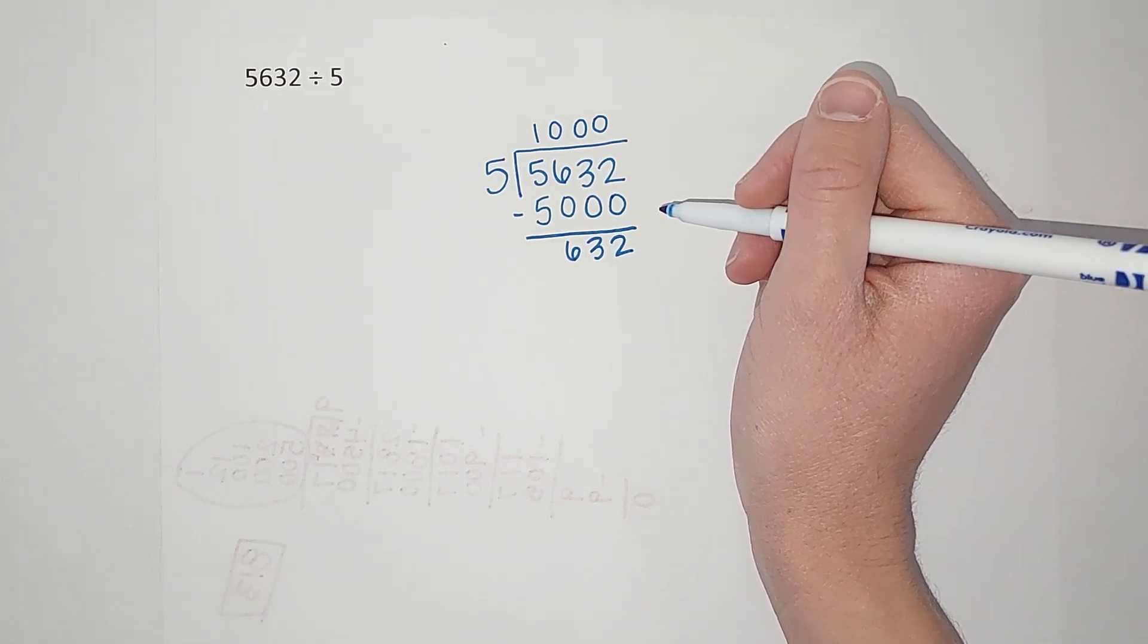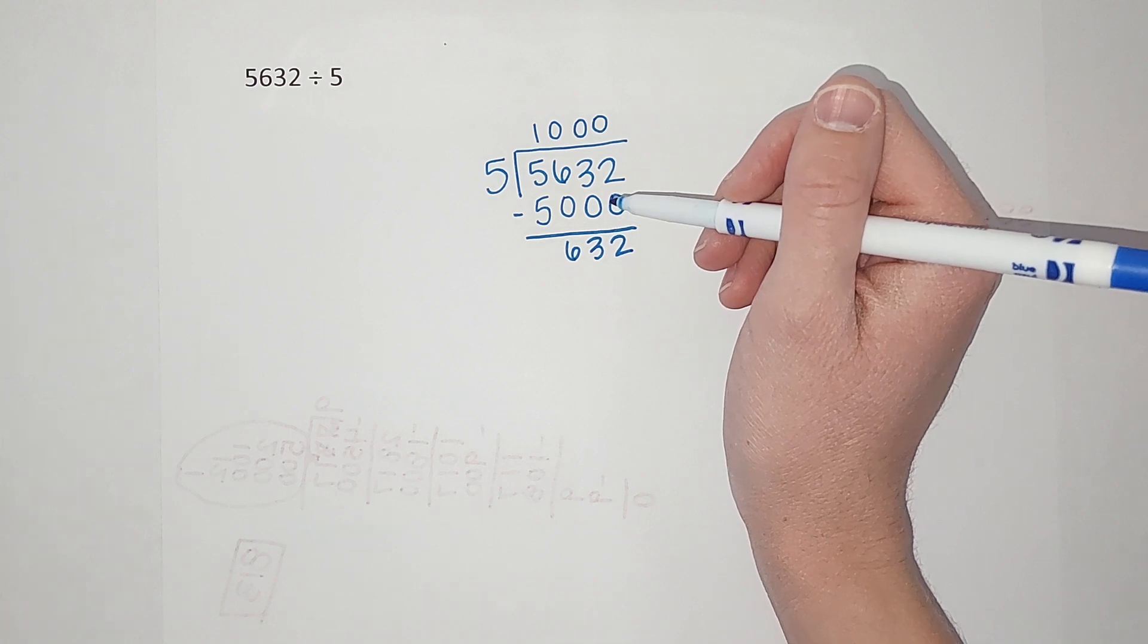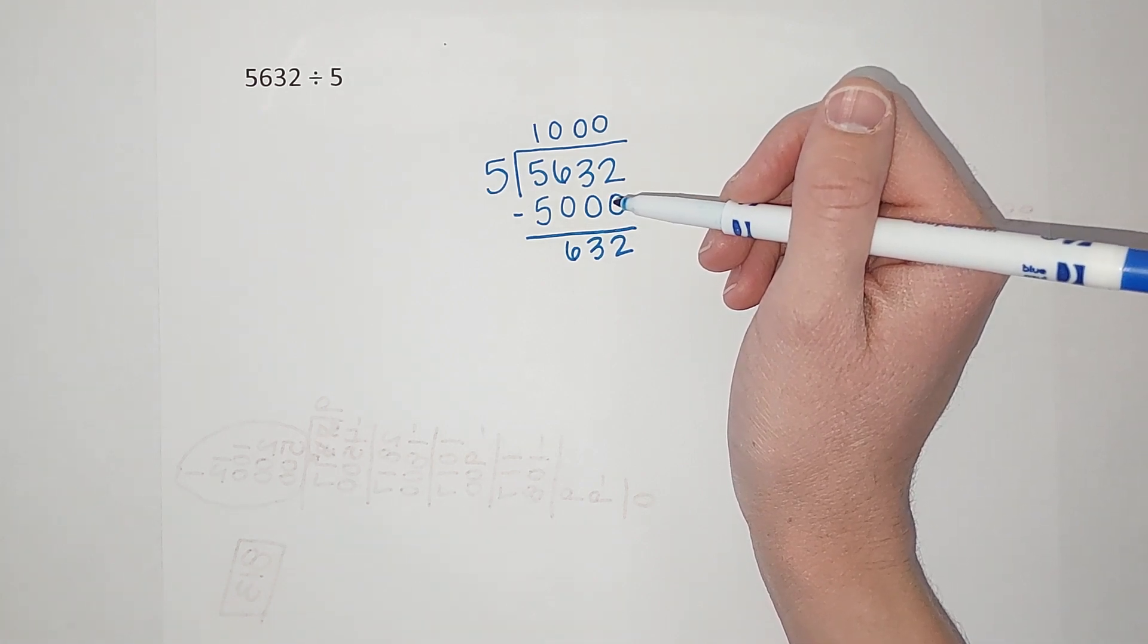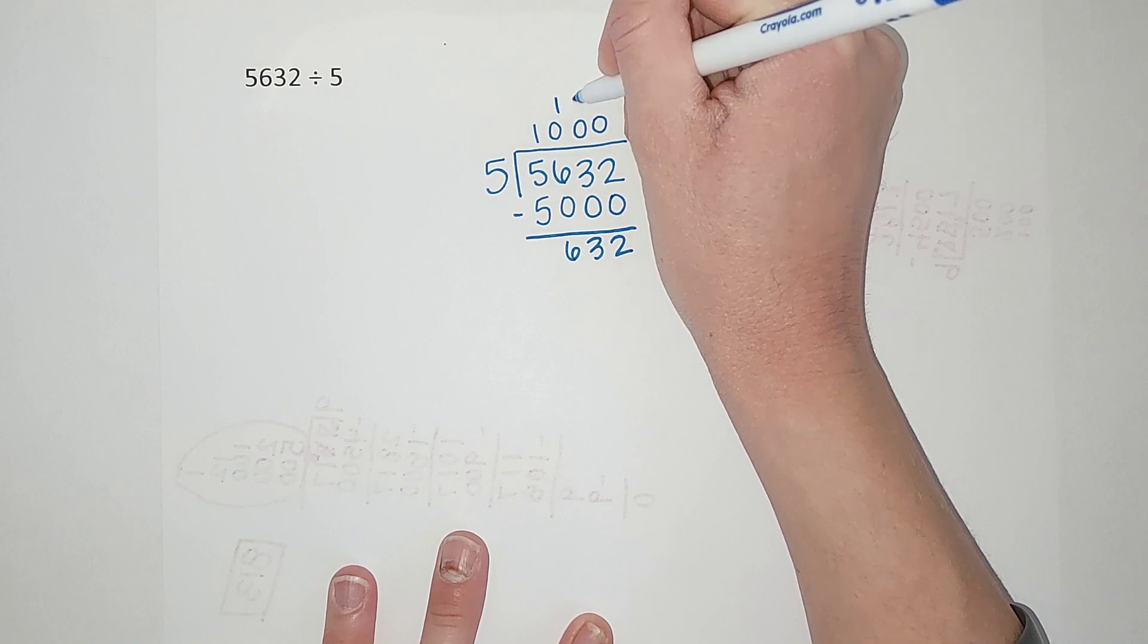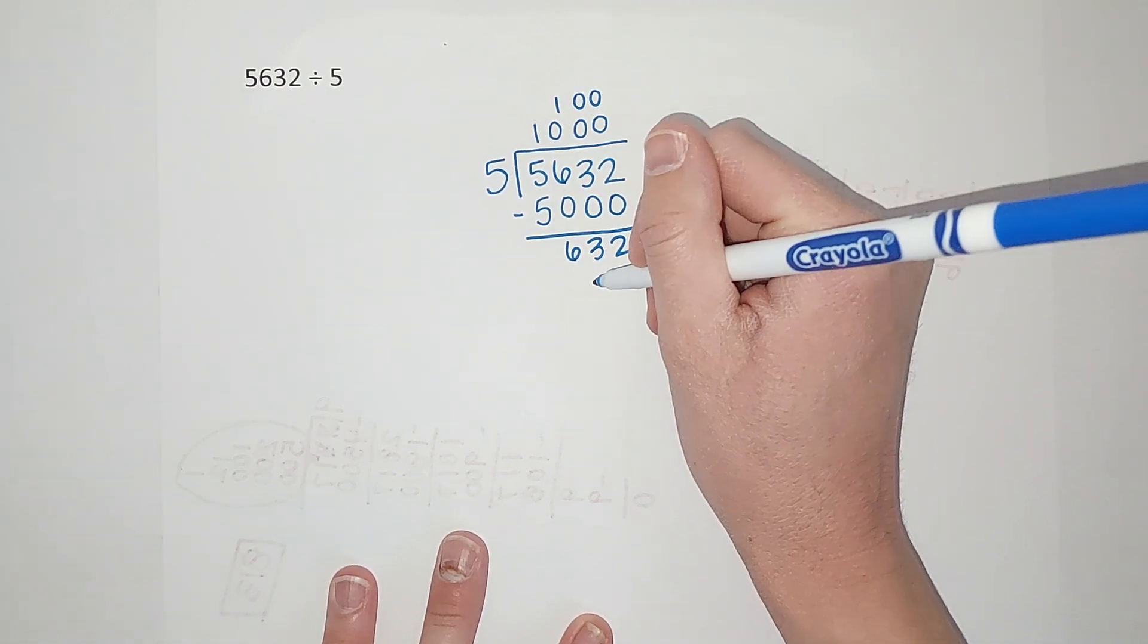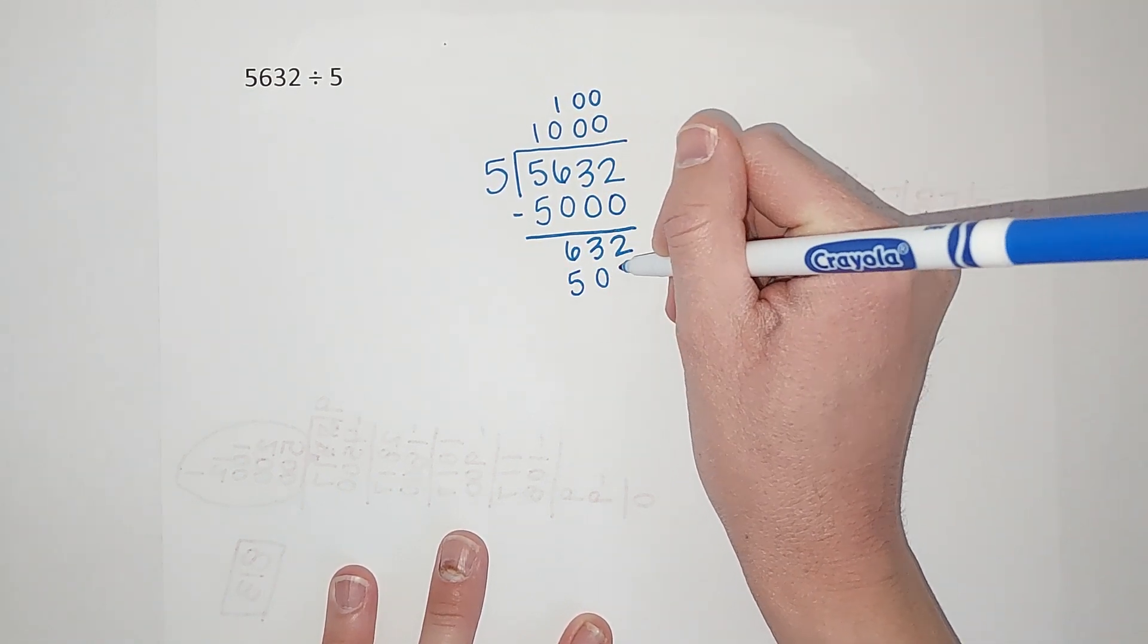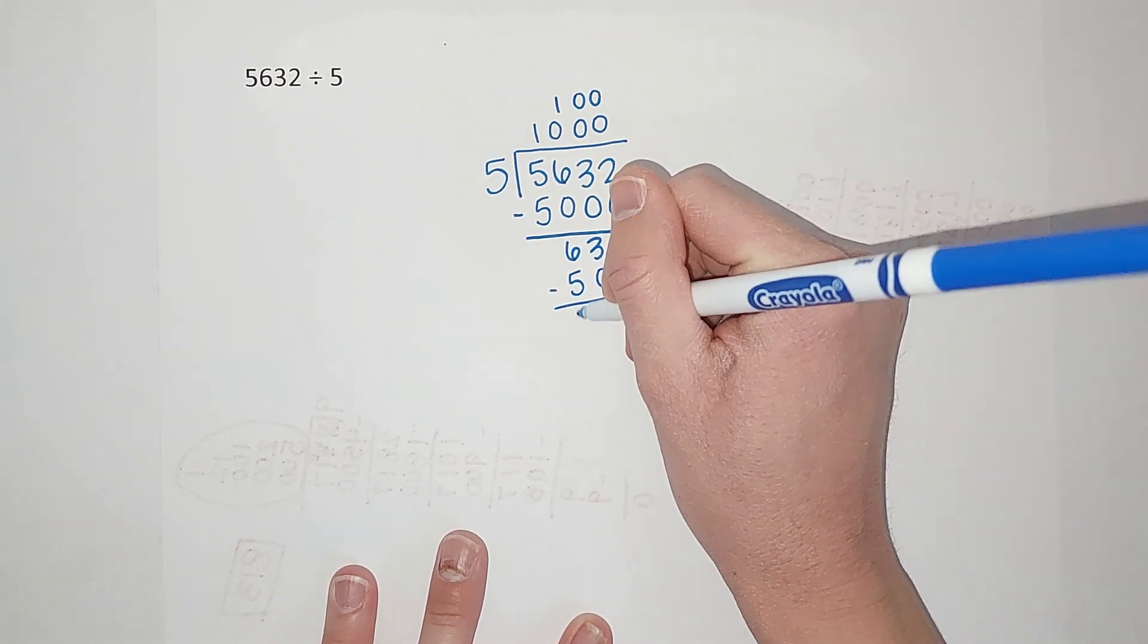Then I'm like, well I know that 5 goes into 632 at least a hundred times, right? Because that's 500. So I'm going to do 100. A hundred times 5 gives me 500. And when I subtract that I get 132.